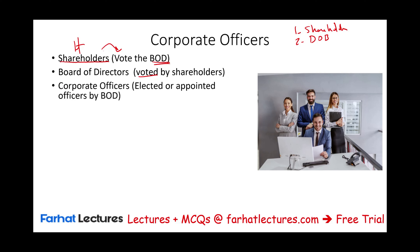Then the board of directors, below this — three — we have this group called corporate officers. The corporate officers are either elected or appointed, usually appointed, by the board of directors. So notice how it works: the owners vote for the board of directors, and the board of directors elect or appoint these corporate officers.